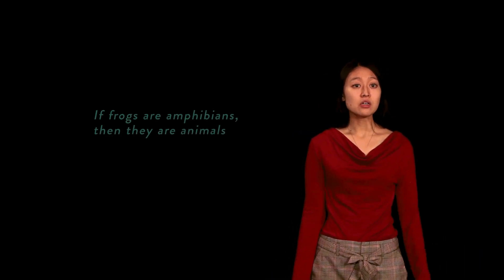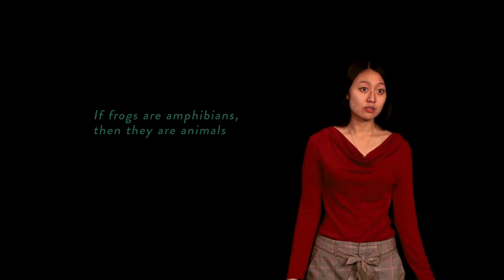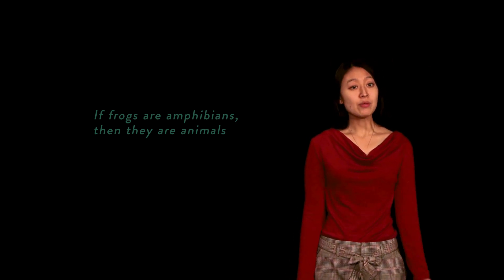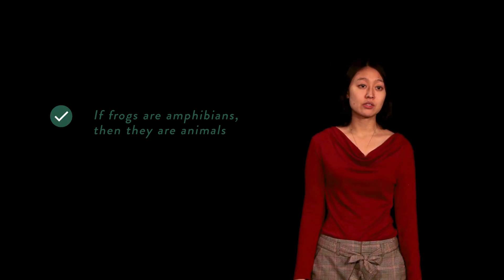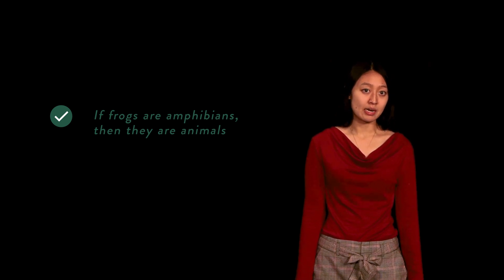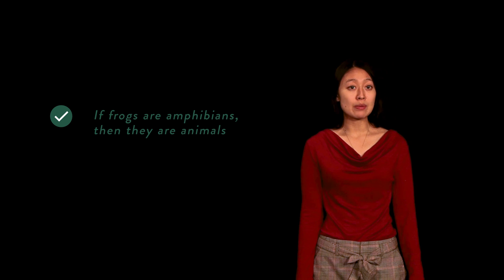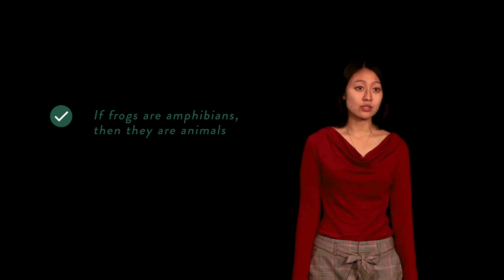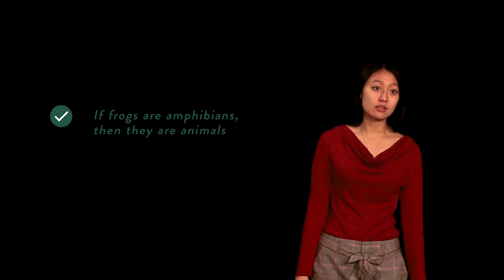Now let's consider a hypothetical compound proposition: if frogs are amphibians, then they are animals. The hypothetical is true because amphibians are a type of animal, so a frog cannot be an amphibian without being an animal. The truth of the first proposition implies the truth of the second.